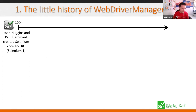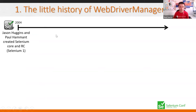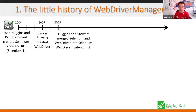Selenium started in 2004 when Jason Huggins and Paul Hammond created what we call today Selenium 1 — a JavaScript library called Selenium Core and a Remote Control client-server project. It was very popular because it provided browser automation. In parallel, in 2007, Simon Stewart created WebDriver, a different project with a different approach. They decided not to compete but to merge these tools into what we call today Selenium WebDriver, or Selenium 2, which was a game changer in the automation space for browsers.